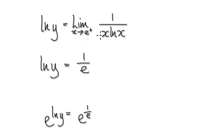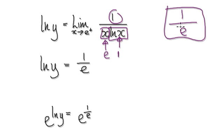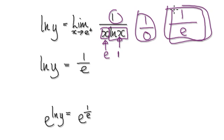As x tends to e, this block here heads towards one and this block here heads towards e. So this is heading towards one, this is heading towards e — nothing breaks down. We have one divided by e, which is a legitimate answer. If you had one divided by zero it would break down, but this is fine. So the limit of ln y is 1 over e.